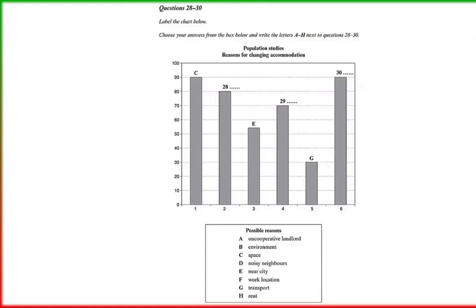Bar 5 is about those people who move because they need a bus or train to get them into the city or to go to work. Bar 6 is interesting — that reason was given quite a lot: people moving because they wanted to be in a more attractive neighbourhood. That is the end of Section 3. You now have half a minute to check your answers.